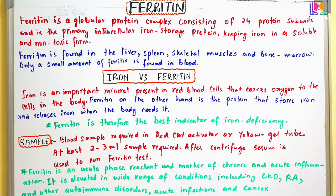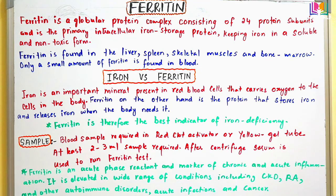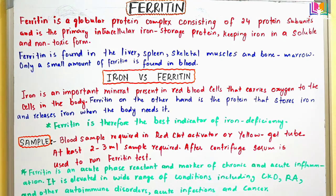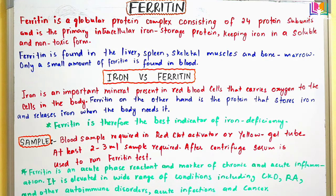Iron is an important mineral present in red blood cells. Red blood cells carry oxygen to the cells in the body. Iron plays a major role in the structure of hemoglobin — as we know, hemoglobin consists of heme and globin, and the heme part is the iron part. So iron is the important mineral required for red blood cells, while ferritin on the other hand is a protein.